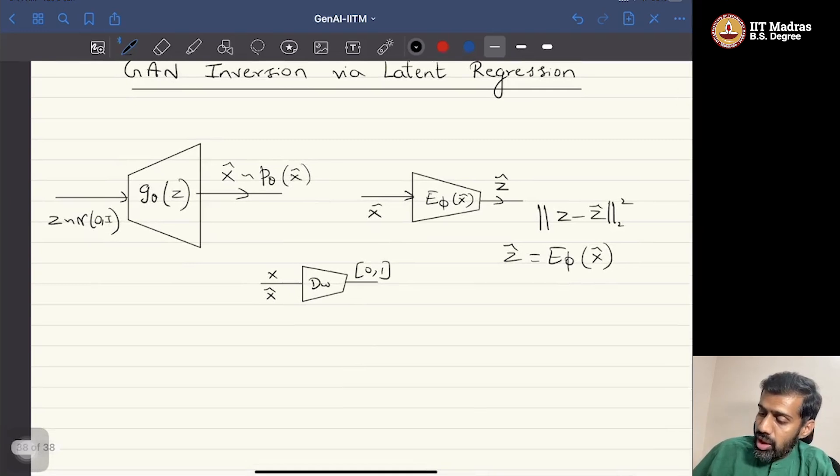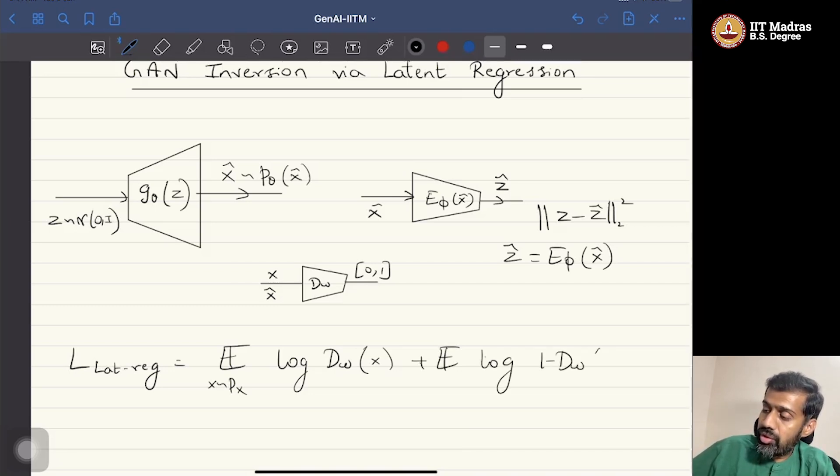So the loss function for this latent regressor is simply the usual GAN loss, which is log of D_w of X, X coming from P_X, and we have the second term as expectation of log of 1 minus D_w of X cap, where X cap comes from P_θ.